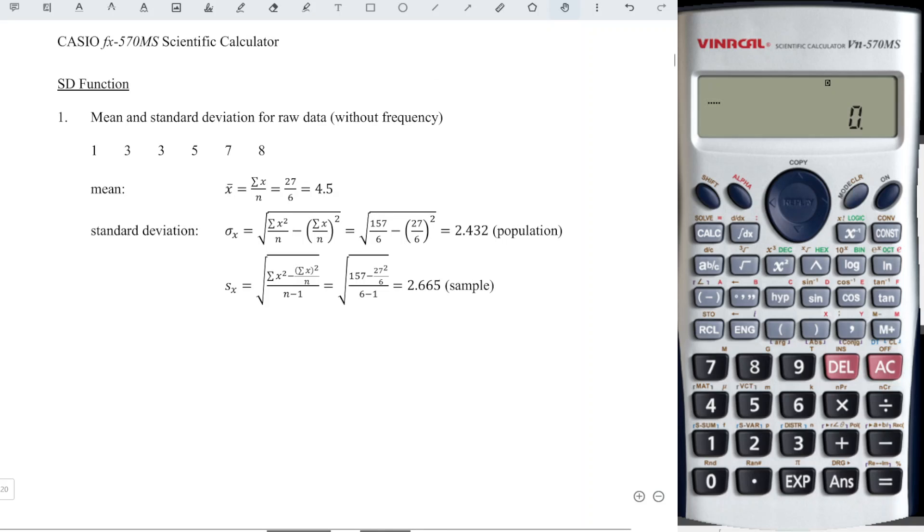First, press mode twice until we see stat as number one. To input the values, we just have to press the value, 1 for example, and we press M plus. So N equal to 1 indicates the first observation that we have.